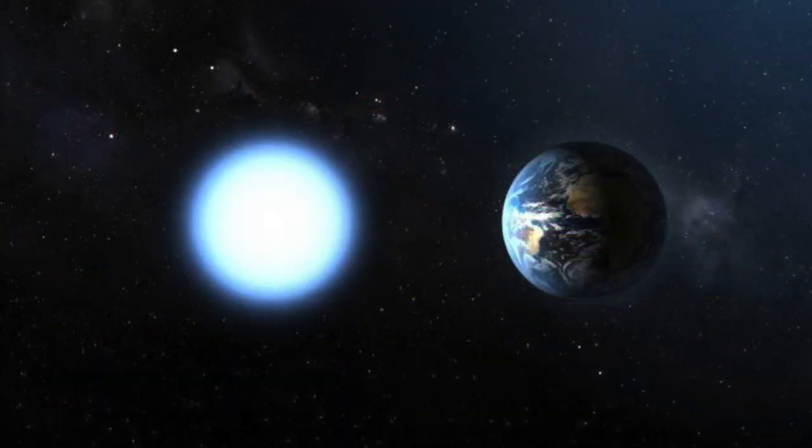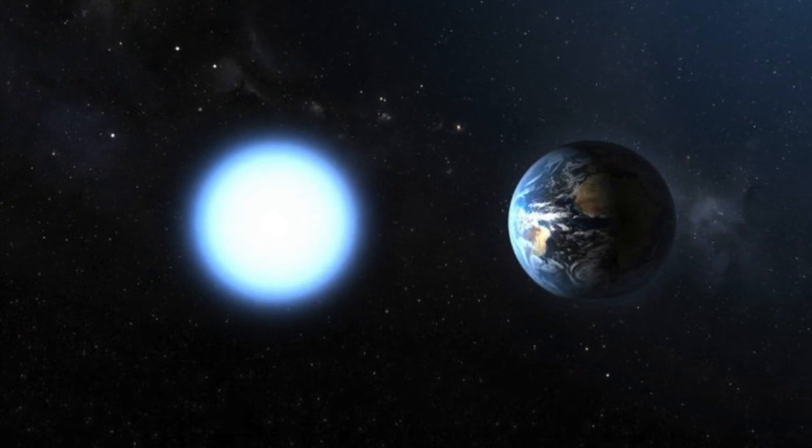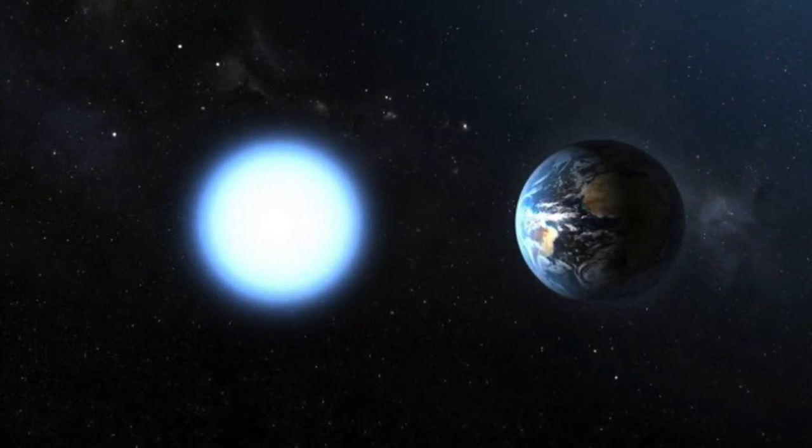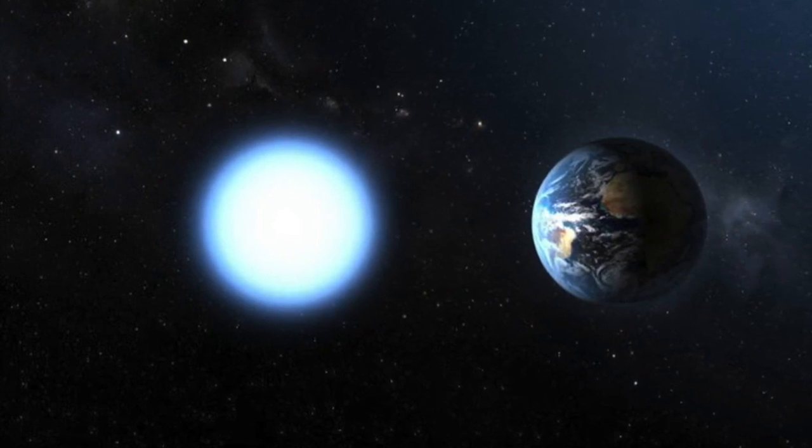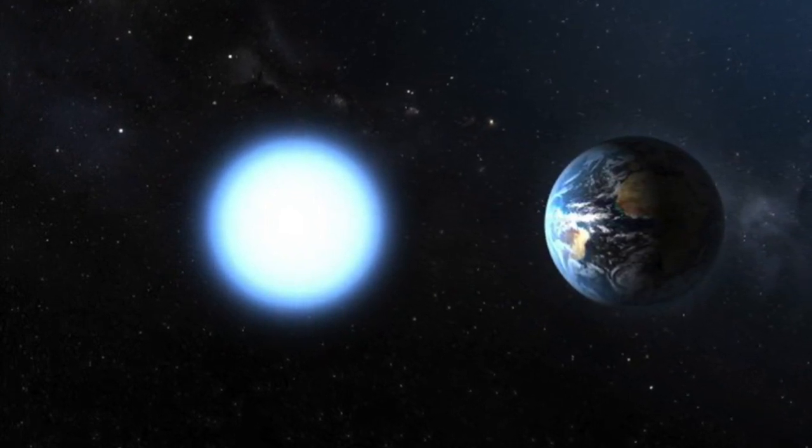Because the core will still have much of the sun's old mass, but now be squashed into an Earth-sized ball, it will be very dense. A teaspoonful of a white dwarf would weigh about as much as three elephants.